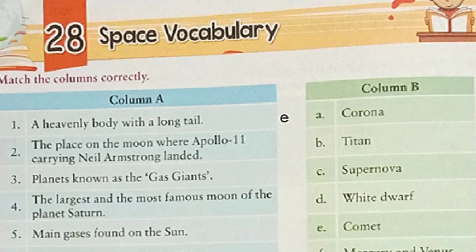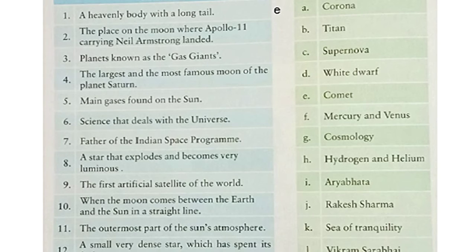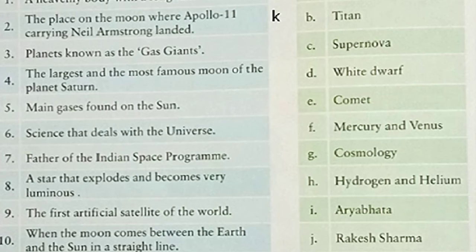Now let's read out number 2: the place on the moon where Apollo 11 carrying Neil Armstrong landed. It is the Sea of Tranquility and the answer is given in option K. So, in front of 2, we will write K. Now let's see number 3: planets known as the gas giants. These are Jupiter and Saturn. Jupiter and Saturn are known as gas giants. So, in front of 3, we will write M.